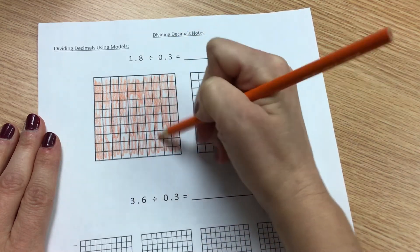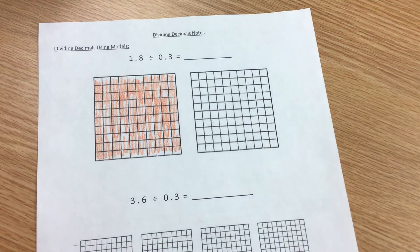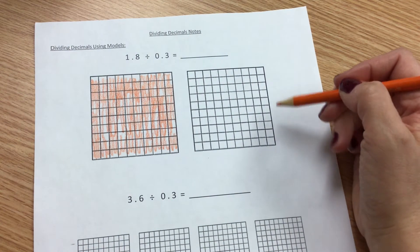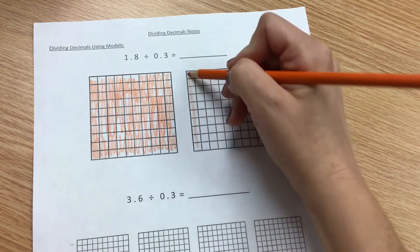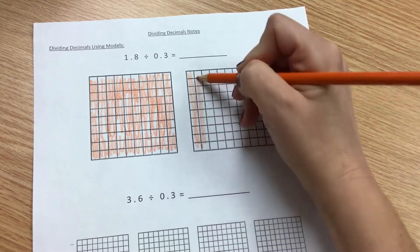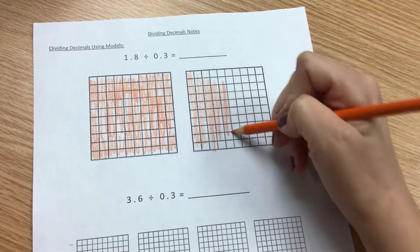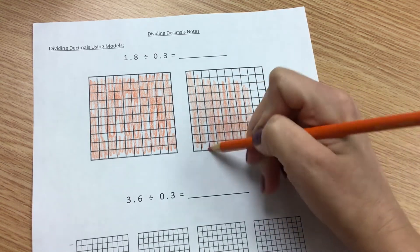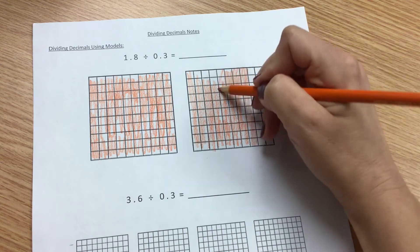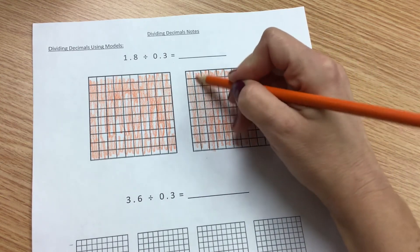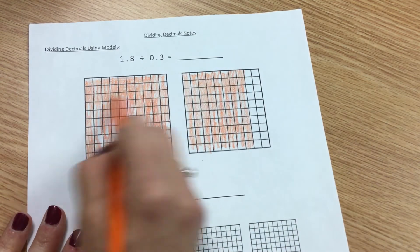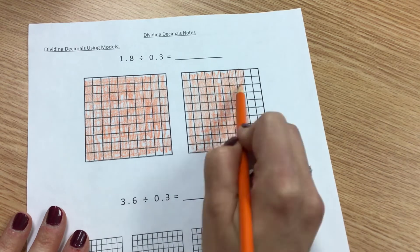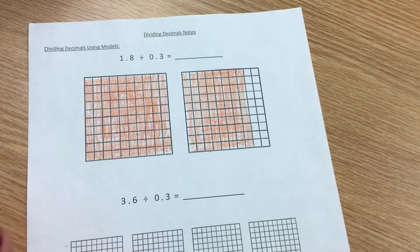I've shaded in one whole. So how many of the next box do I need to shade in? 8 tenths of them. So here's 1 tenth, 2, 3, 4, 5, 6, 7, 8. So far my model shows 1 and 8 tenths.